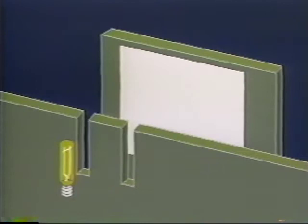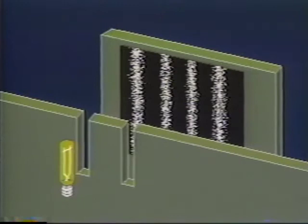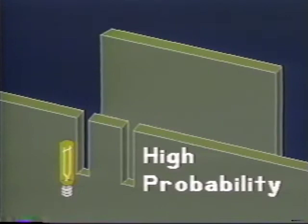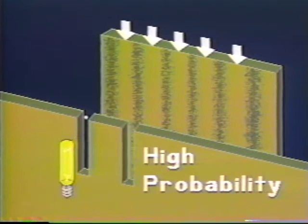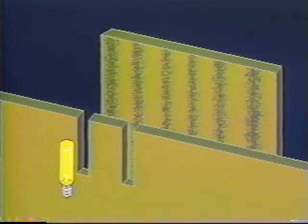Sometimes both models are necessary. For example, single photons of light passing through a pair of slits will eventually produce a characteristic interference pattern. The probability is high that any single photon will strike one of these bright lines. To actually calculate the shape of this probability pattern, we need to use the wavelength of radiation.